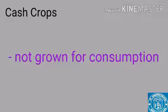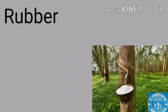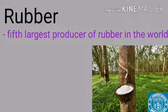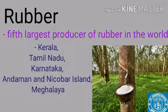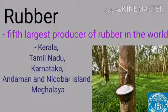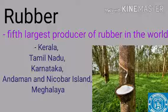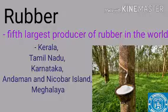Now we will learn about cash crops, which are grown not for consumption but for other purposes. The first is rubber. Rubber is an important raw material and India is the fifth largest producer of rubber in the world. It is cultivated in Kerala, Tamil Nadu, Karnataka, Andaman and Nicobar Islands, and Garo Hills of Meghalaya, doing well in tropical and subtropical areas with rainfall of about 200 centimeters and temperature above 25 degrees Celsius.